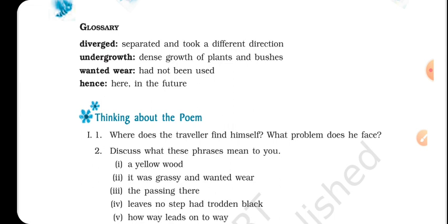So here are a few word meanings that have been given in the chapter. The first word is 'diverge' — it means separated and took a different direction. There was a point from which two roads were diverging, they were going in different directions.